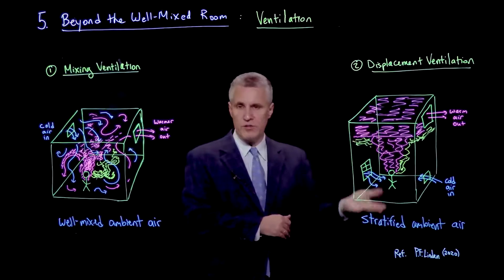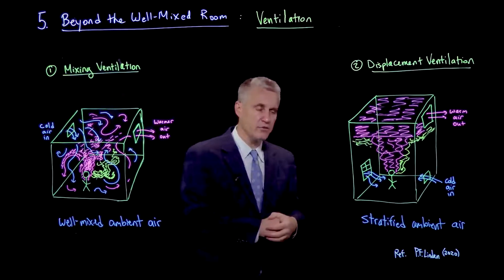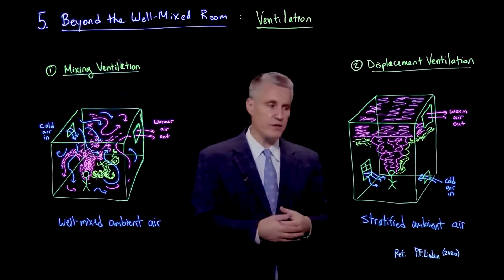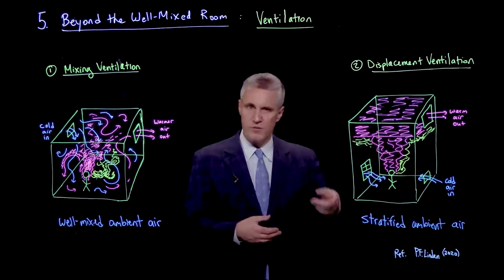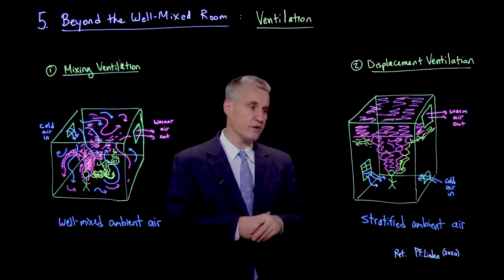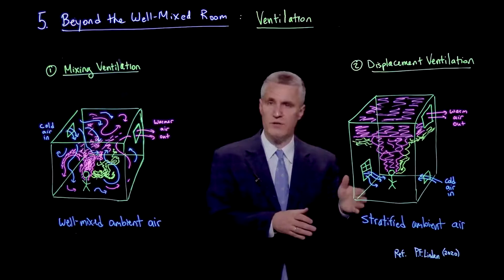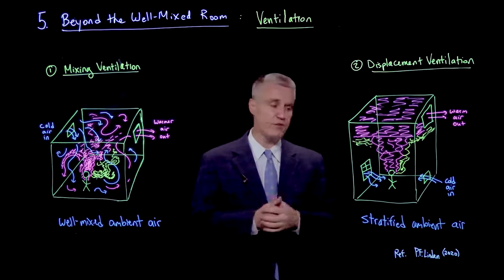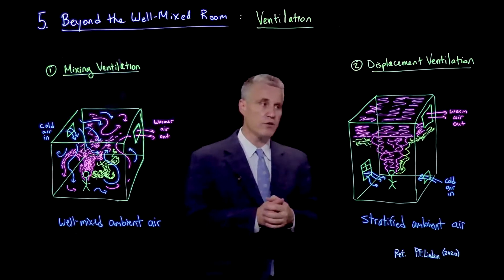So that's actually a stable thermal gradient. And so at least the buoyancy forces are not leading to any large-scale convection, although there certainly are still boundary layer flows and plumes from the people and from their motion, as I have described earlier.